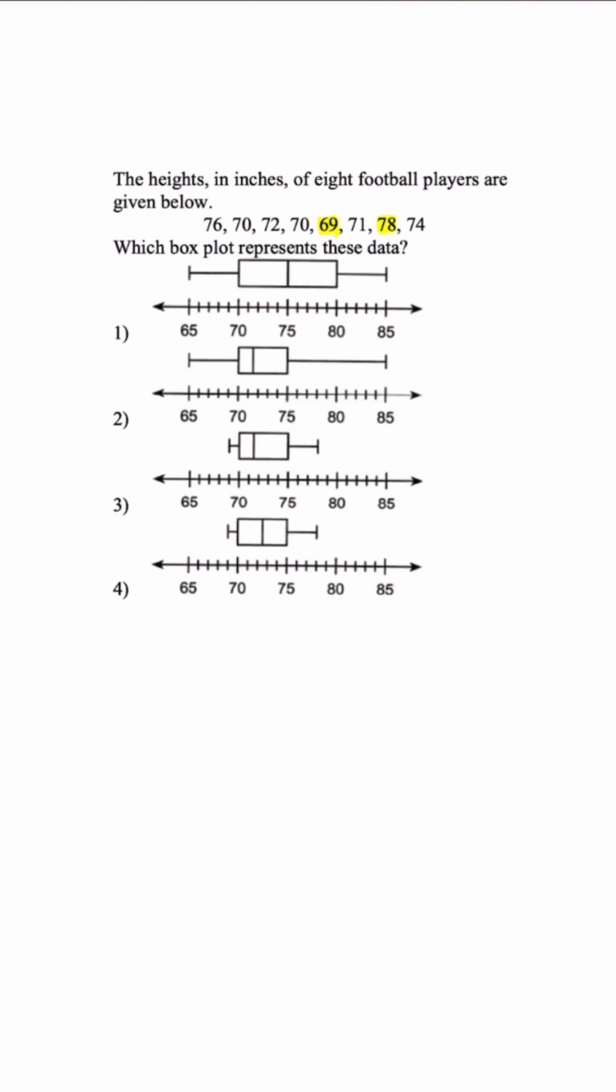When we look at answer choice A, the lowest value is not 65 and the highest is 85. Same thing with answer choice 2. Now, when we get to answer choices 3 and 4, they have the same minimum and maximum values, but the difference is the medians.